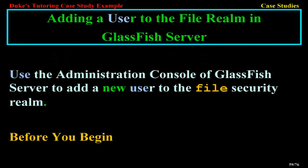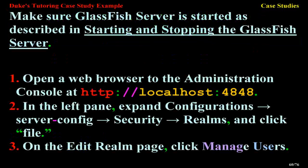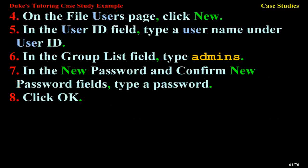Use the Administration Console of GlassFish Server to add a new user to the File Security Realm. Before you begin, make sure GlassFish Server is started. Open a web browser to the Administration Console at http://localhost:4848. In the left pane, expand Configurations > Server-Config > Security > Realms, and click File. On the Edit Realm page, click Manage Users. On the File Users page, click New. In the User ID field, type a username. In the Group List field, type Admins. In the New Password and Confirm New Password fields, type a password. Click OK.